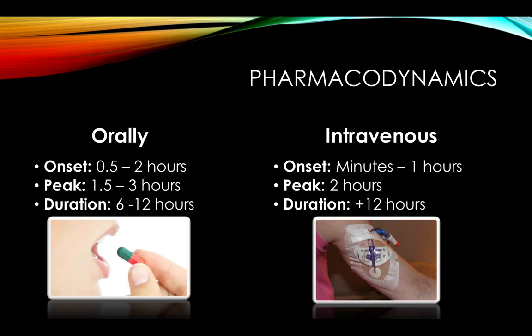PO Dilantin has an onset within 30 minutes to 2 hours, a peak concentration of 1.5 to 3 hours, and a steady-state serum concentration in 7 to 10 days. Duration of action depends on a half-life that can go up to 45 hours. PO Dilantin is usually given as a sustained-release capsule with a peak of 4 to 12 hours. IV infusion must be administered directly into a large vein via a central line or PICC line. The drug can be diluted with saline, but not dextrose, as that causes precipitation.